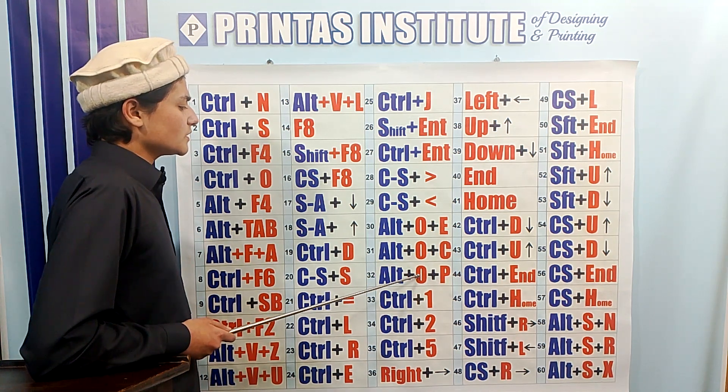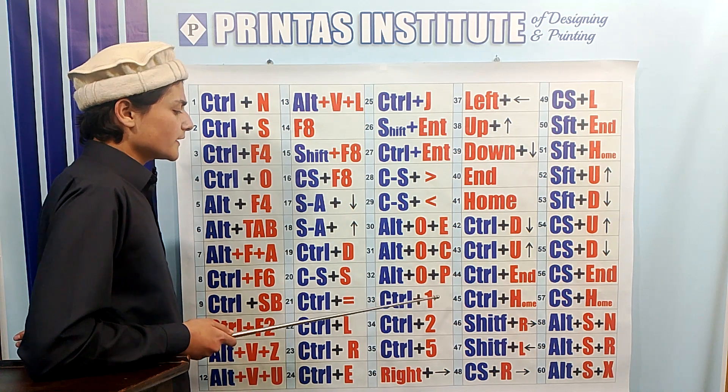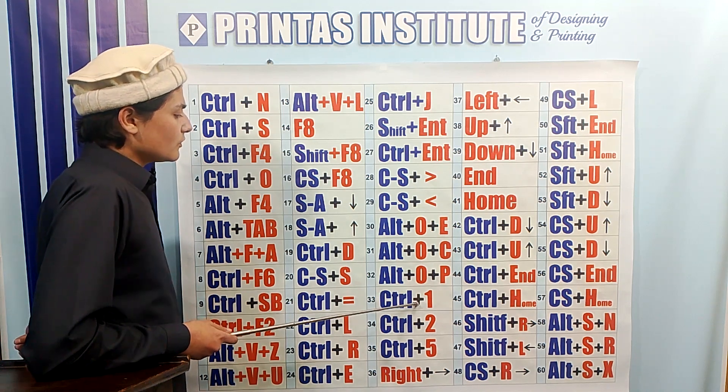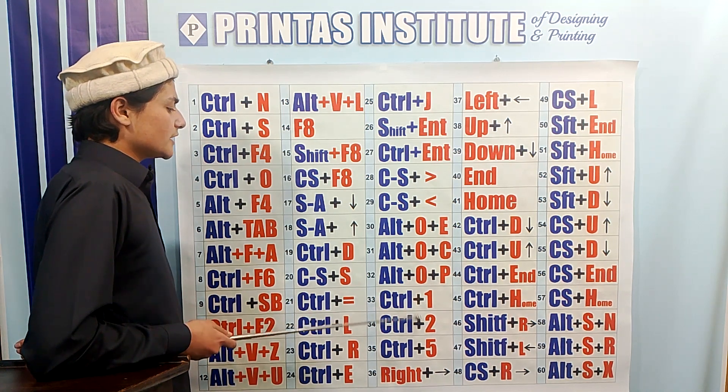Alt O P is used to open the paragraph preferences window. Alt O with the spacing shortcut is used to set the paragraph into single space. Ctrl T is used to set double spacing.